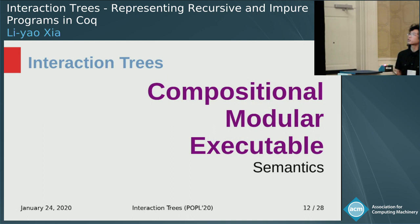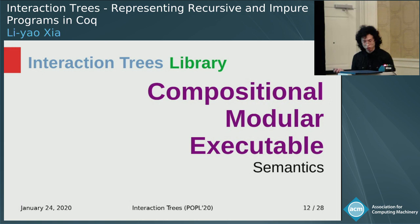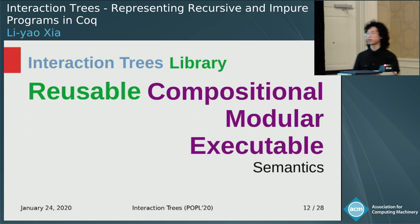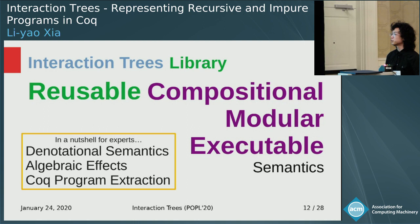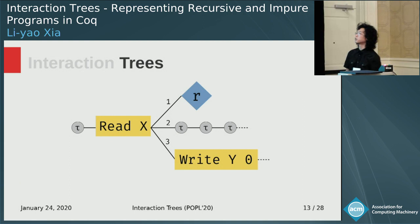We propose interaction trees as a possible solution, and in particular, this is implemented as a library, so these semantics are reusable. You don't have to reprove the meta-theory of our paper — you can just import a library. Interaction trees are not a totally new thing; the core concepts are decades-old ideas. The idea is that computations that interact with the external world can be seen as trees.